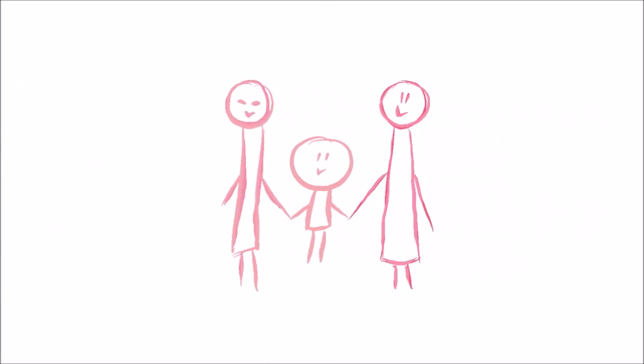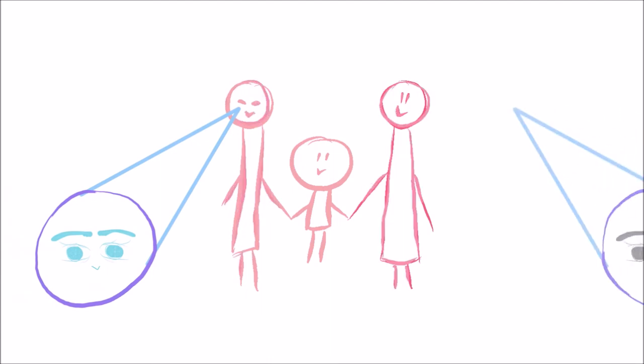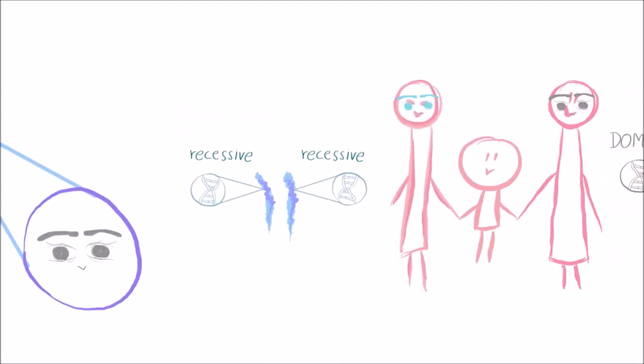Alright, let's use an example to help understand this better. A mother has blue eyes. A father has brown eyes. The allele for blue eyes is recessive. So we can conclude that both of the mother's alleles are recessive as well.